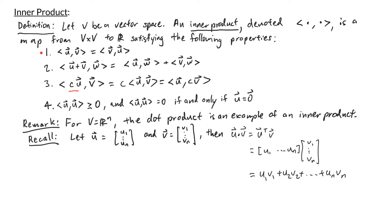For example, the dot product is commutative, it distributes over vector addition, and you can pull scalars out of dot products. Also, the dot product of a vector with itself is greater than or equal to zero, and equals zero if and only if you're working with the zero vector. So the inner product is just a generalization of the dot product. Moving forward, we're just going to work with the dot product, using dot product notation instead of angle brackets.